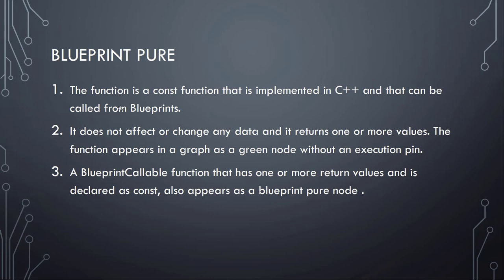Next, what's BlueprintPure? BlueprintPure is a const function - it doesn't change any data and must return one or more values. Like BlueprintCallable, it is implemented in C++ and can be called from Blueprints. When you've worked with Blueprints you've seen those greenish nodes without execution pins - those are BlueprintPure functions; they calculate something and return a value. There are two ways to define one: with the BlueprintPure specifier, or by making it BlueprintCallable with a return value declared as const.